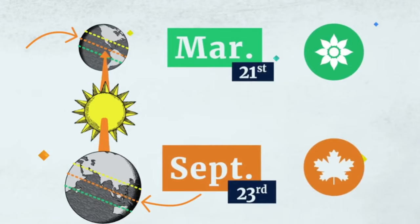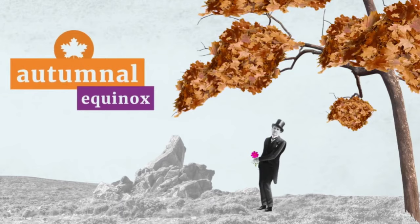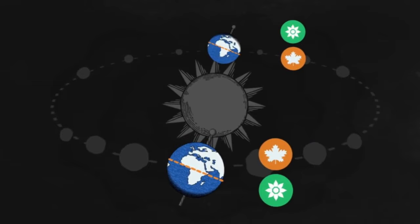We call the beginning of spring the vernal equinox, while the beginning of autumn is, conveniently, the autumnal equinox. Again, which is which depends on the hemisphere. But during both equinoxes, day and night last the same amount of time.